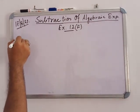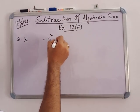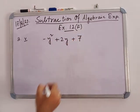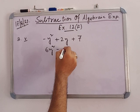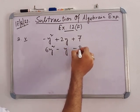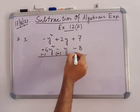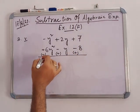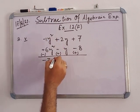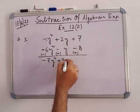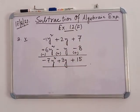In number 5: subtract 6y squared minus y minus 8 from minus y squared plus 2y plus 7. After changing signs, we get: minus y squared minus 6y squared equals minus 7y squared; plus 2y plus y equals plus 3y; and plus 7 plus 8 equals plus 15. So the answer is minus 7y squared plus 3y plus 15.